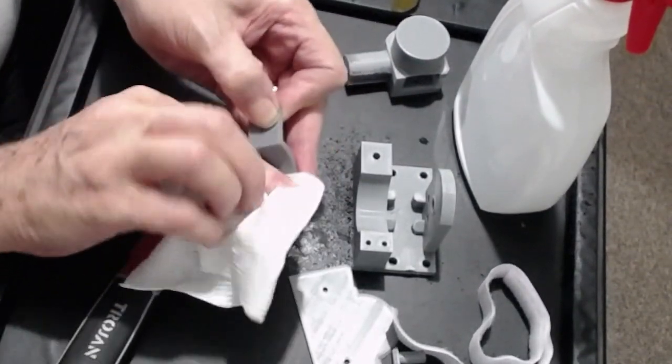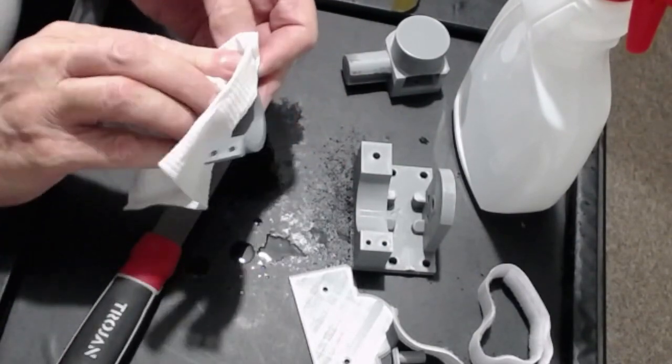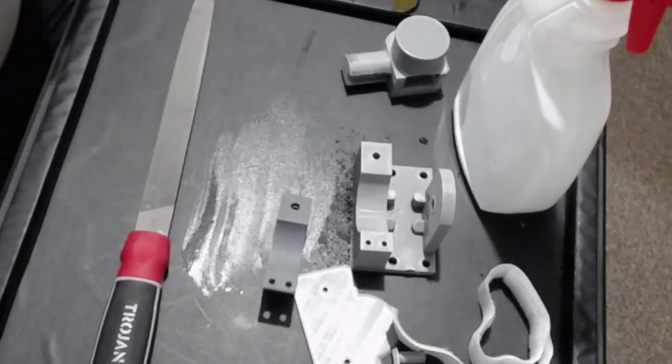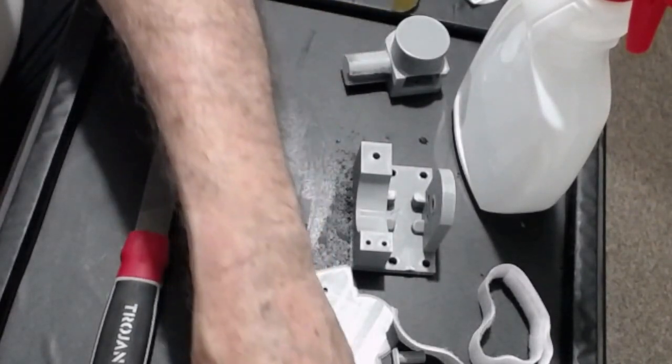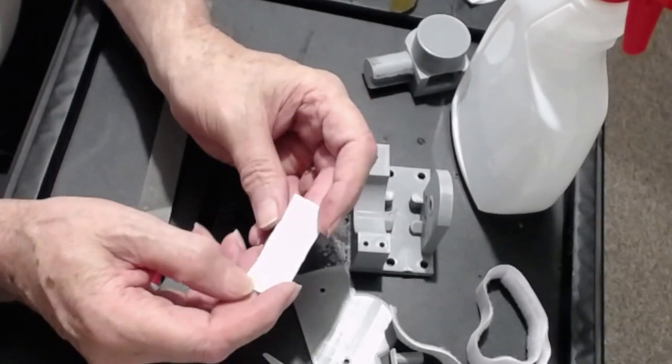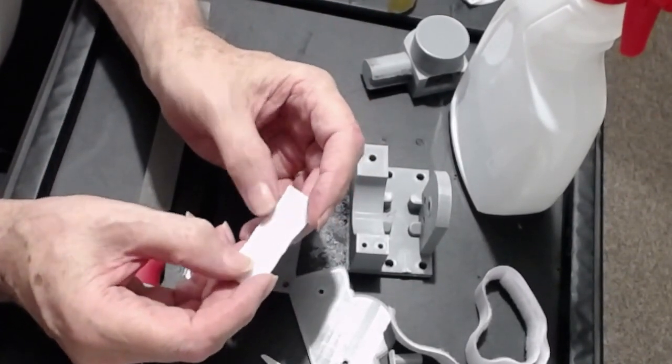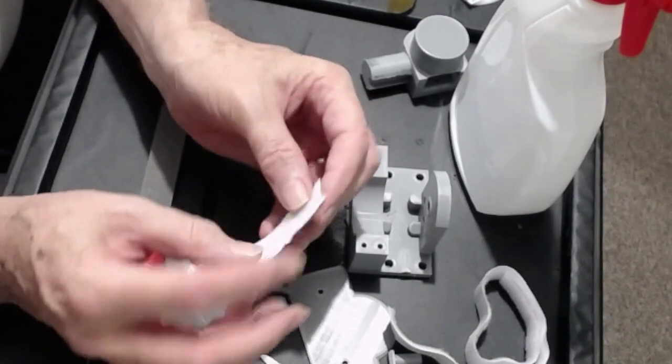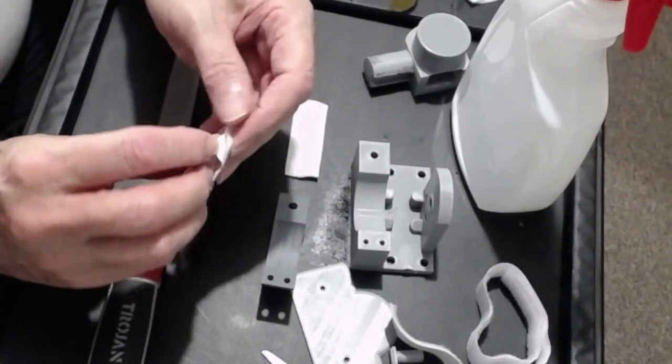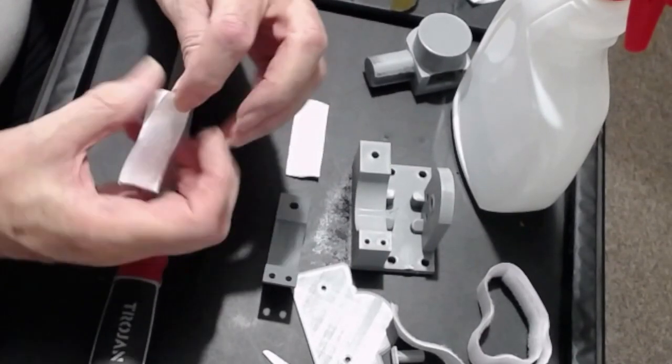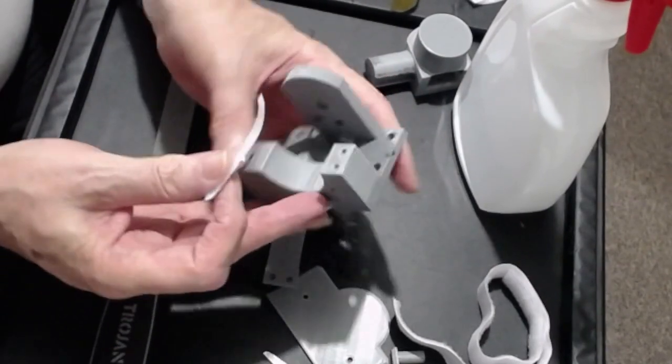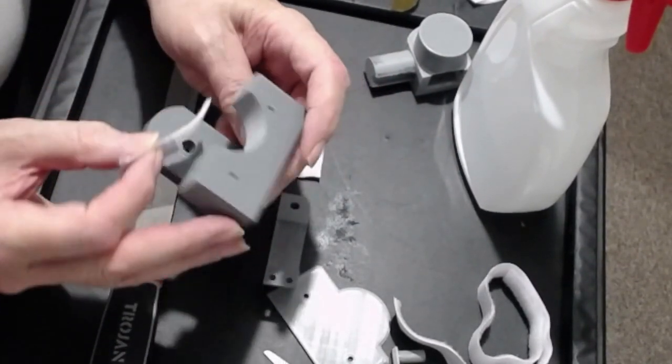Once that's done, you'll need two lengths of 20 millimeter wide velcro loop, cut to 60 millimeters. You can take that loop then and apply it to the inside of those surfaces.